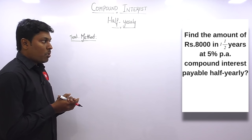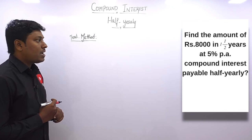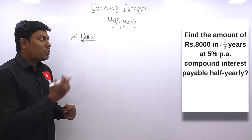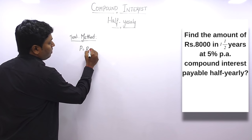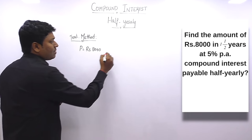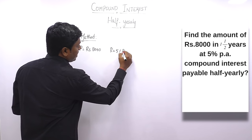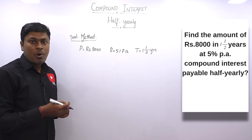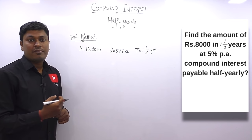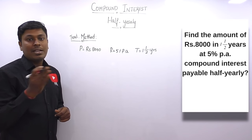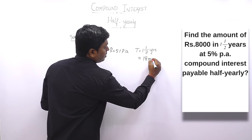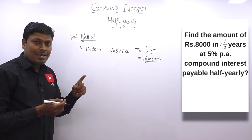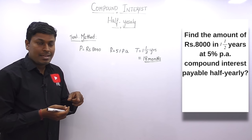Question 3: Find the amount on rupees 8,000 in one and a half years at 5% per annum compound interest payable half-yearly. Given: principal = 8,000; rate = 5% per annum; time = 1½ years = 18 months. Divide rate by 2: rate = 2.5%. Split 18 months into three six-month periods.